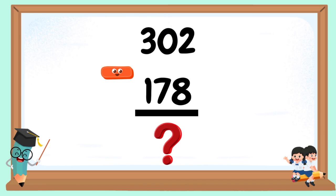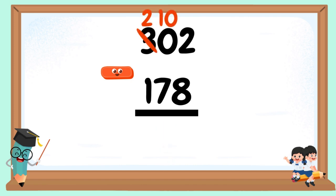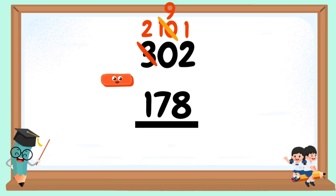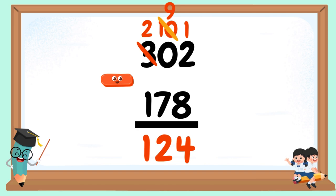302 minus 178. 8 minus 2 cannot be done. Borrow 1 ten from the 10's column, but there are 0 tens, so regroup from the 100's. Borrow 1 from 300; 3 becomes 2, and 0 becomes 10. Now borrow 1 from the 10: 10 becomes 9 and 2 becomes 12. 12 minus 8 equals 4. 9 minus 7 equals 2. 2 minus 1 equals 1. 124 is our difference.